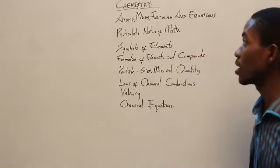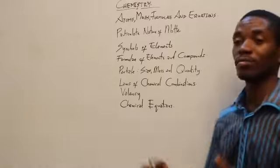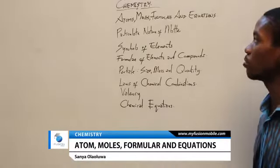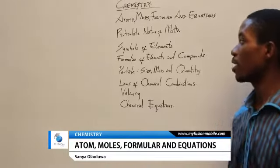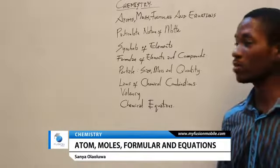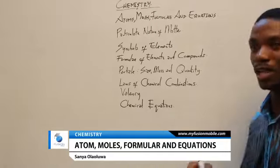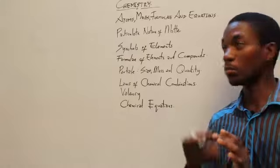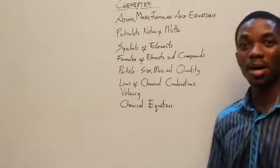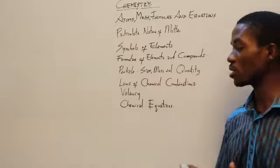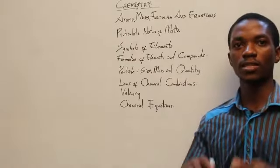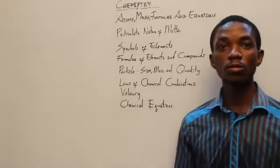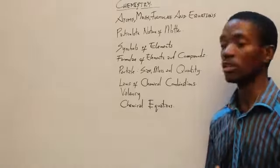In this particular lesson, we'll be looking at atoms, molecules, formulas, and equations. We'll be considering the particulate nature of matter and the symbols of elements, formulas of elements and compounds. Then we'll consider particles and look at the size of a particle, the mole of a substance. We'll also talk about the mass and quantity of a substance, the laws of chemical combinations, valency, and we'll conclude the lesson with chemical equations.